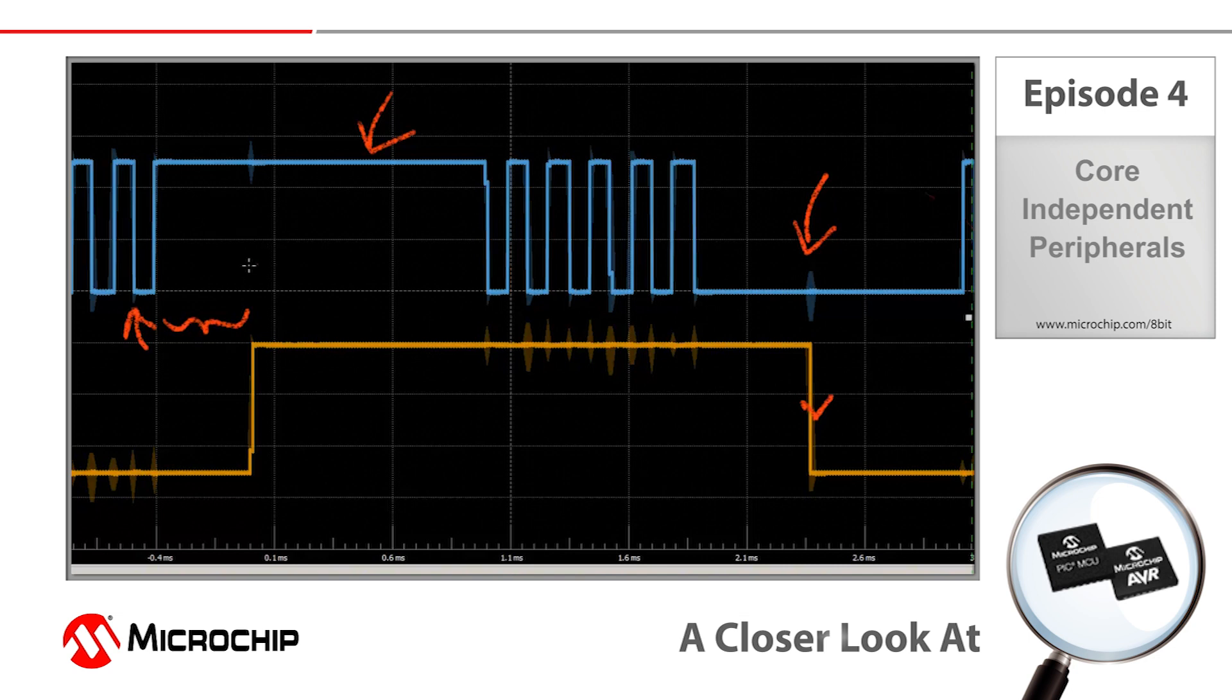You can also see a delay after the one shot pulse goes high before the core actually gets back to toggling our heartbeat signal. So we get a few more pulses here, and then the timer interrupts after two milliseconds. Again, after the small amount of time that it takes for the core to actually detect that the interrupt has occurred, it stops generating the heartbeat signal and then goes through the prioritization and then jumps to the timer interrupt service routine, where it eventually drives our one shot pin low here.